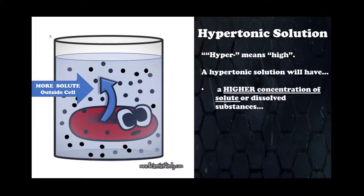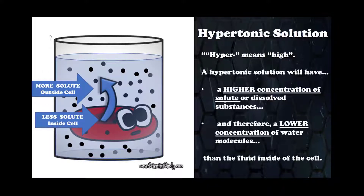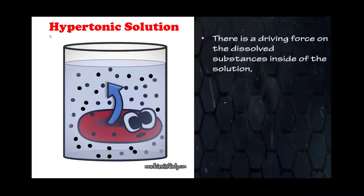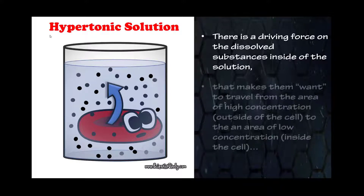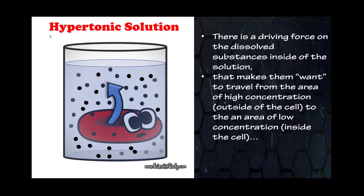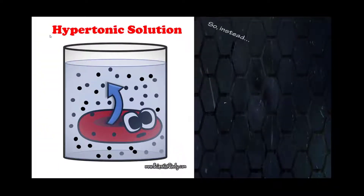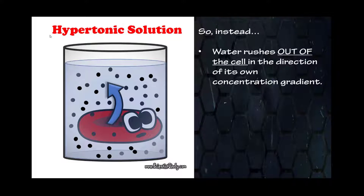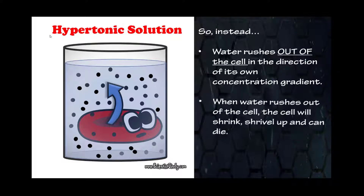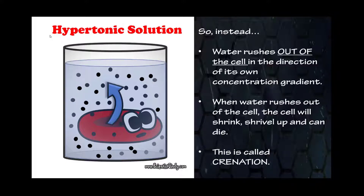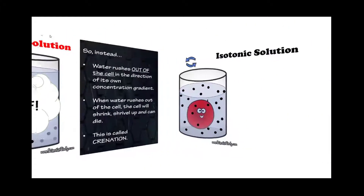Hyper means high. A hypertonic solution will have a higher concentration of solute, or dissolved substances, and therefore a lower concentration of water molecules than the fluid inside of the cell. There is a driving force on the dissolved substances inside the solution that makes them want to travel from the area of high concentration outside the cell to the area of low concentration inside the cell, but they can't. So instead, water rushes out of the cell in the direction of its own concentration gradient. When water rushes out of the cell, the cell will shrink, shrivel up, and can die. This is called crenation.